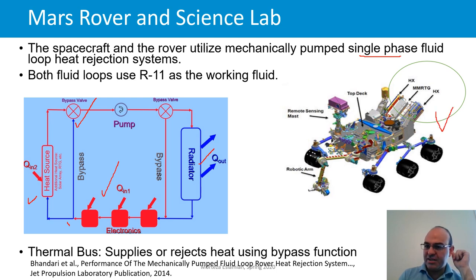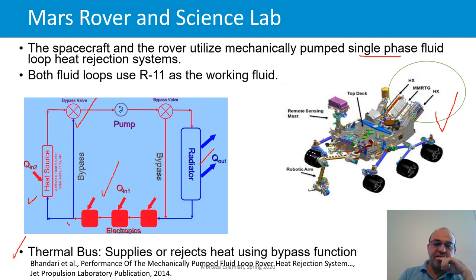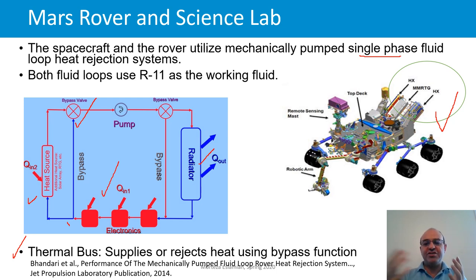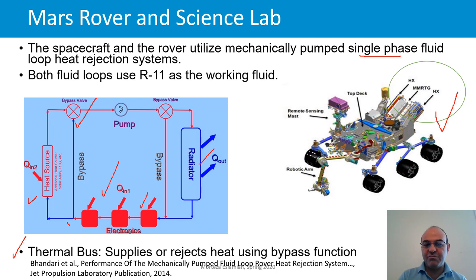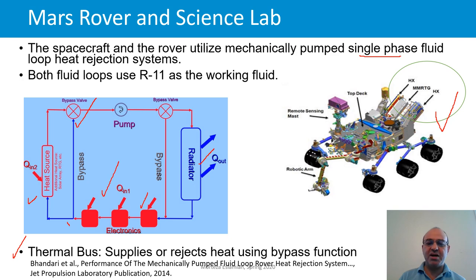This system is also called a thermal bus because it supplies or rejects heat using a bypass function — like a bus where people can get on and off. The fluid loop distributes and shares heat between different components: if one component generates a lot of heat and another needs heat, that heat can be shared. The heat-sharing capability, or thermal bus function, is one key advantage of the pumped fluid loop.